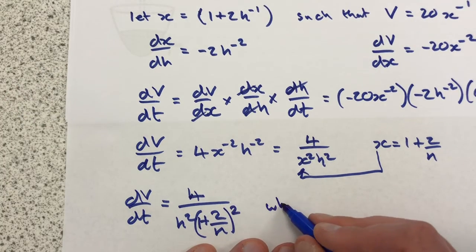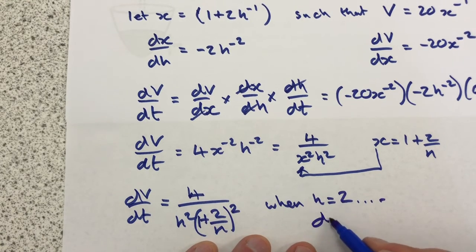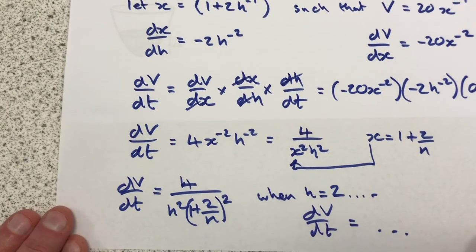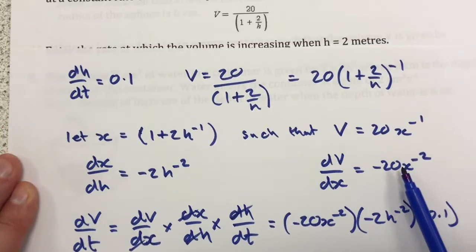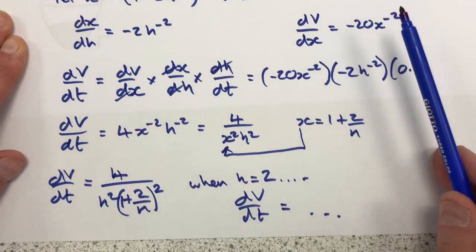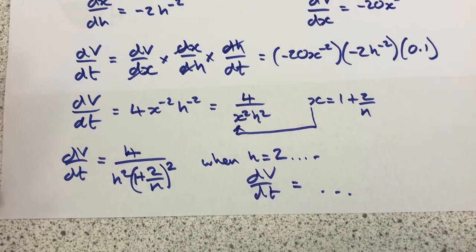And then when h equals 2, dV/dt equals, and that's where the punchline of the question comes from. So just make sure that you can follow this procedure yourself all the way through to get to the same expression that I have here in order to answer the question in full.